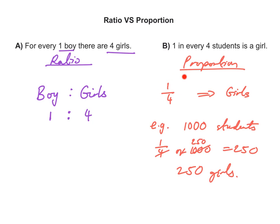A proportion tells us the relationship of a category with respect to the total number of students. Whereas in a ratio, the quantity of one category is compared to the quantity of another category — here, the quantity of boys is compared to the quantity of girls — giving us the relationship that for every one boy there are four girls, or for every four girls there is one boy.